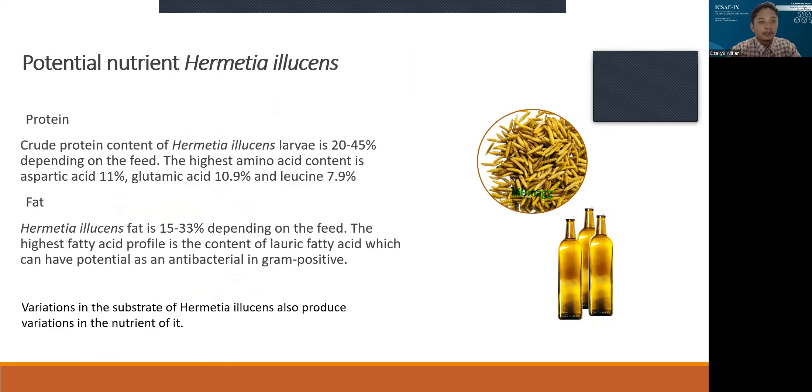The crude protein of Hermetia illucens larva is 20-45% depending on the feed. The highest amino acid content is aspartic acid, glutamic acid, and leucine.